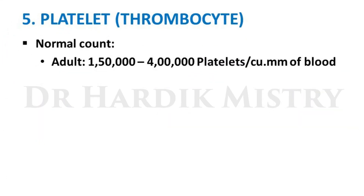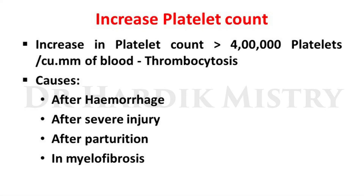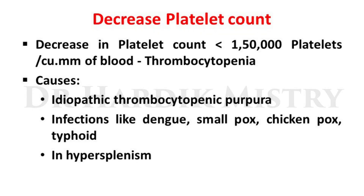Platelets, also known as thrombocytes, have a normal count in adults of 1.5 to 4 lakhs per cubic mm of blood. Increase above 4 lakhs — thrombocytosis — occurs after hemorrhage, after severe injury, after parturition, and in myelofibrosis. Decrease below 1.5 lakhs — thrombocytopenia — is caused by idiopathic thrombocytopenic purpura, infections like dengue, smallpox, chickenpox, typhoid, and hypersplenism.